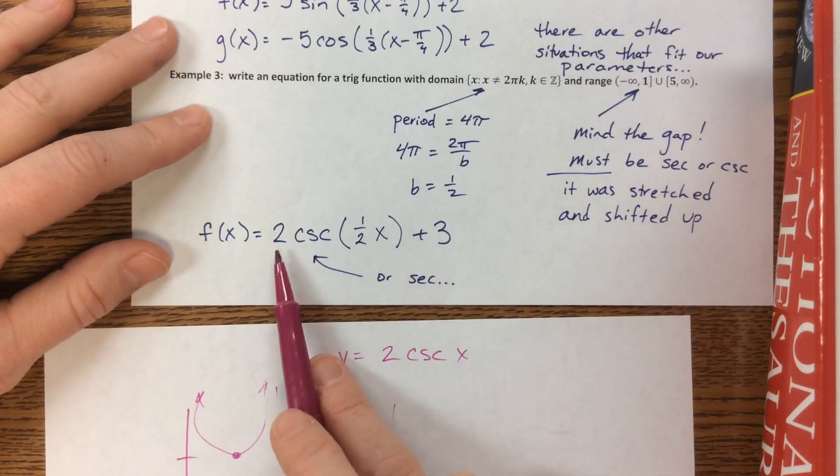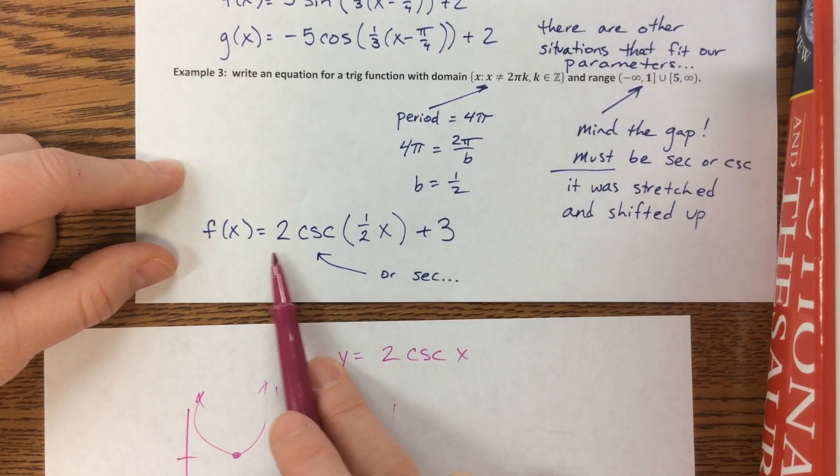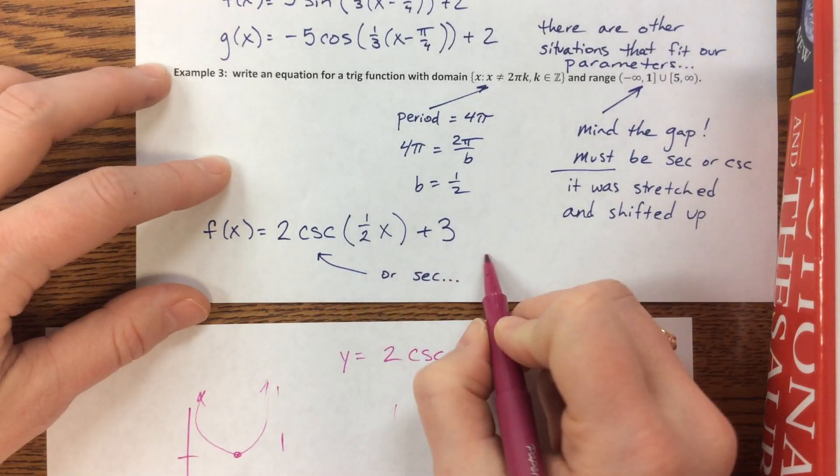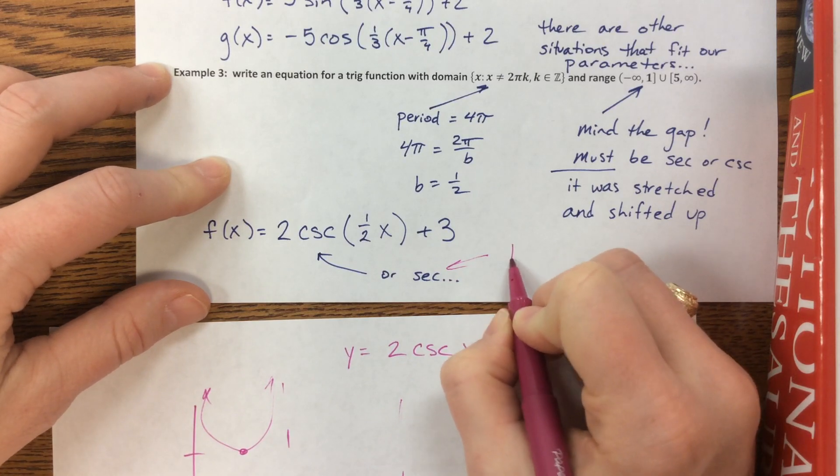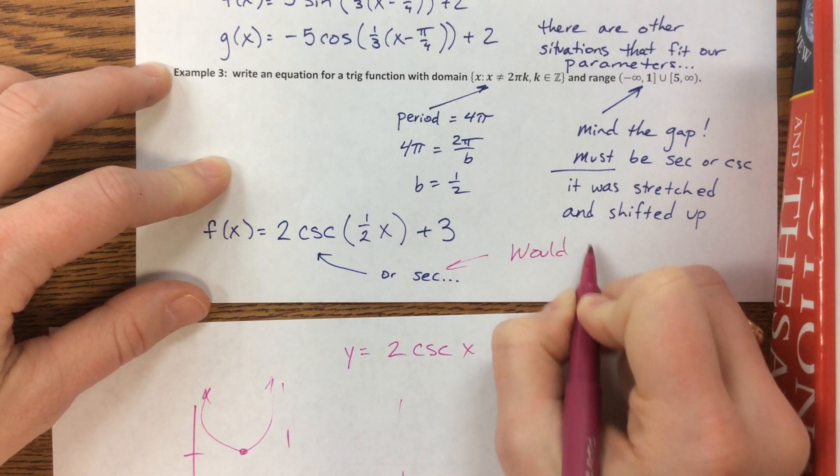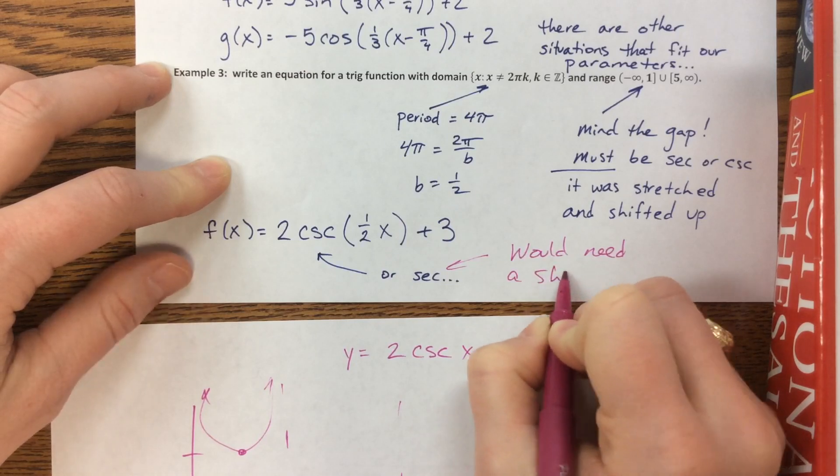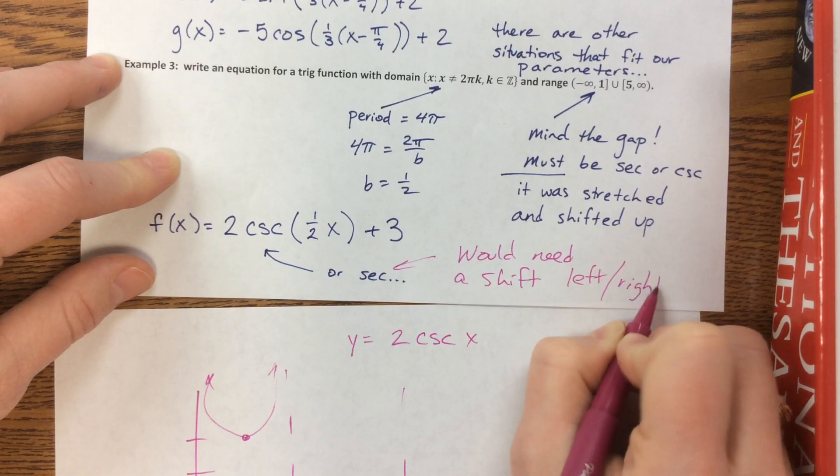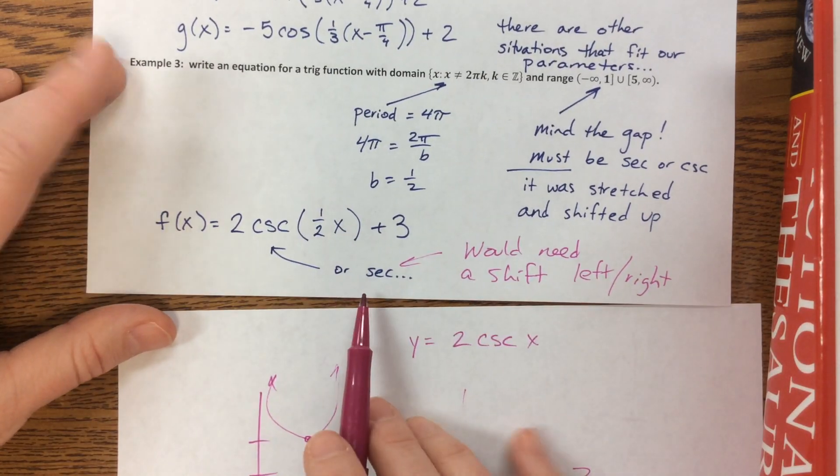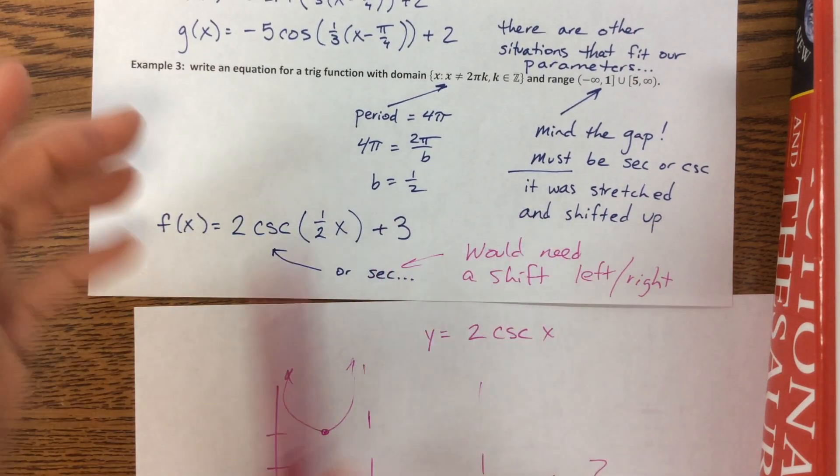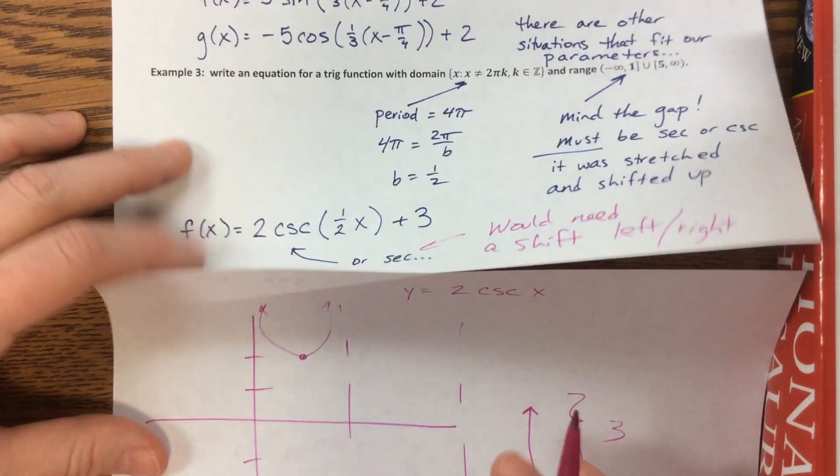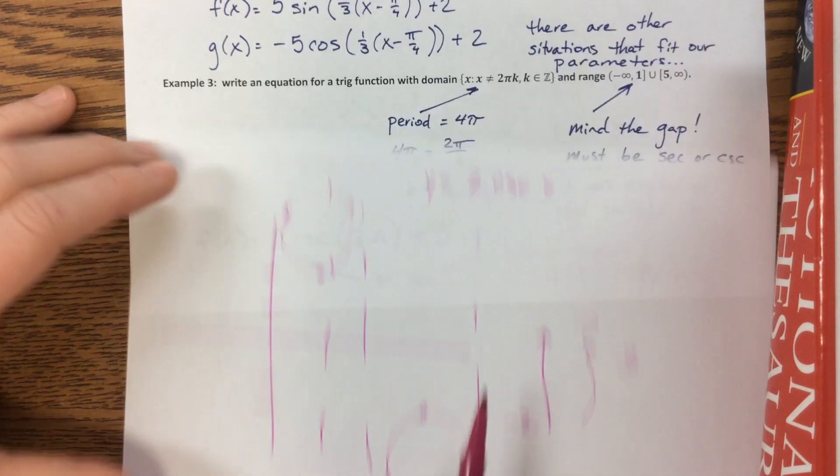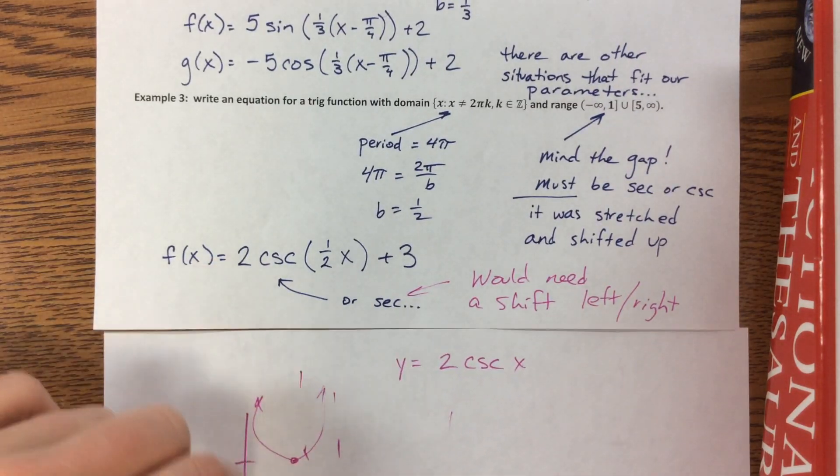Now I said or secant, which is true, but that would need a shift left or right, depending on which one we did. So it's definitely more complicated if we try to do this as secant, because secant's asymptotes wouldn't be, secant's asymptotes would be through the middle of this one, and not where we needed them to be. But here is the best answer for that one, and I hope that was helpful.